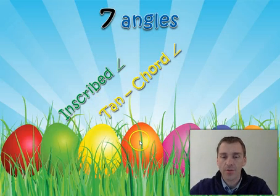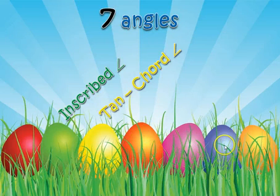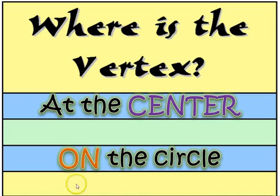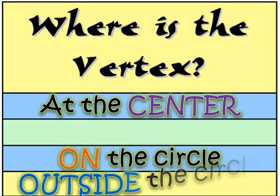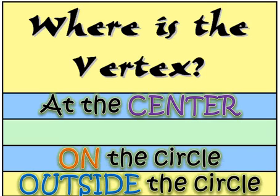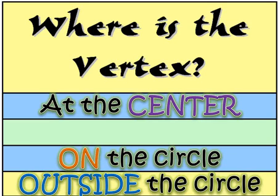Now we're going to tackle the orange egg, the purple egg, and the blue egg — moving to the very bottom flap of the foldable. We're writing: 'Where the vertex is outside the circle.' So we've moved the vertex from the center, then to on the circle, and now outside the circle. This video tackles three angles where the vertex is outside and how you find their measures.